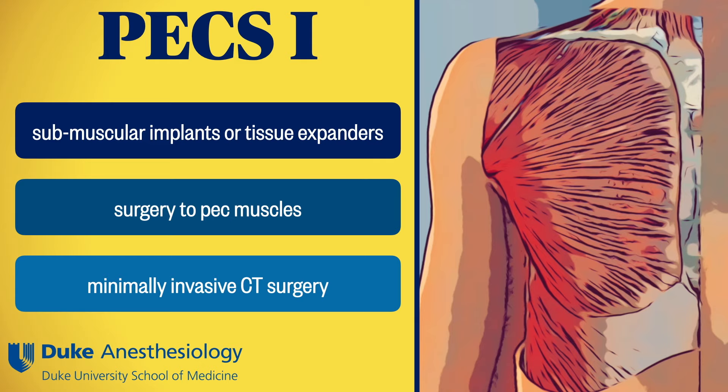Pecs 1 is an excellent block for anything involving the pec muscles themselves. We use it routinely for breast reconstruction with submuscular implants or tissue expanders, as it relieves that dull, achy sensation associated with stretching of the pec. We'll also include pecs 1 if the surgical oncologist is performing a modified radical mastectomy where the pec major fascia is being stripped off the muscle. We've also had great success using this for thoracoscopic surgery and minimally invasive heart surgery.